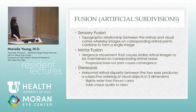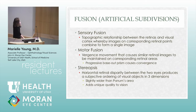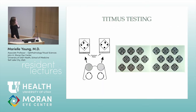Stereopsis is slightly wider than Panum's area and adds a unique quality to your vision. We test it using those little books in clinic. Your vision isn't dramatically different looking out of one eye versus two, but stereopsis does add something. We test it with stereo vision tests like the Titmus test.